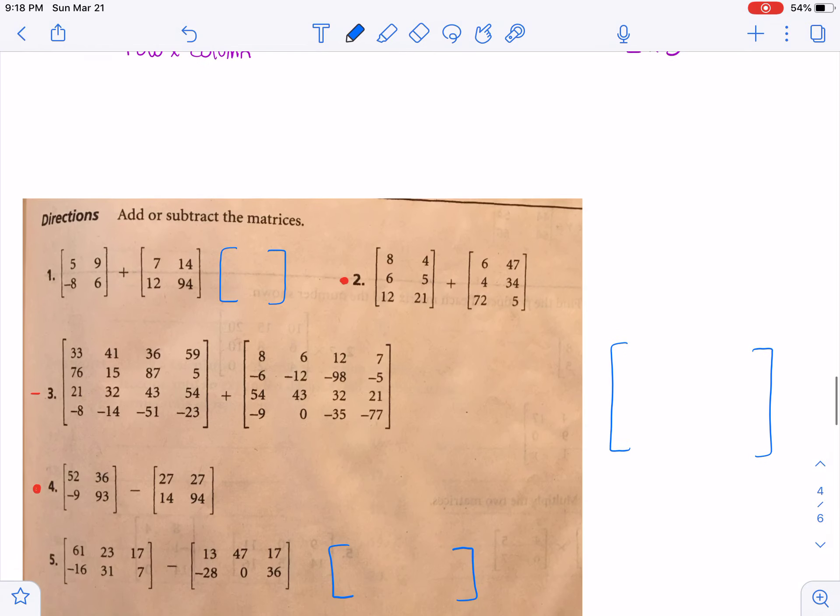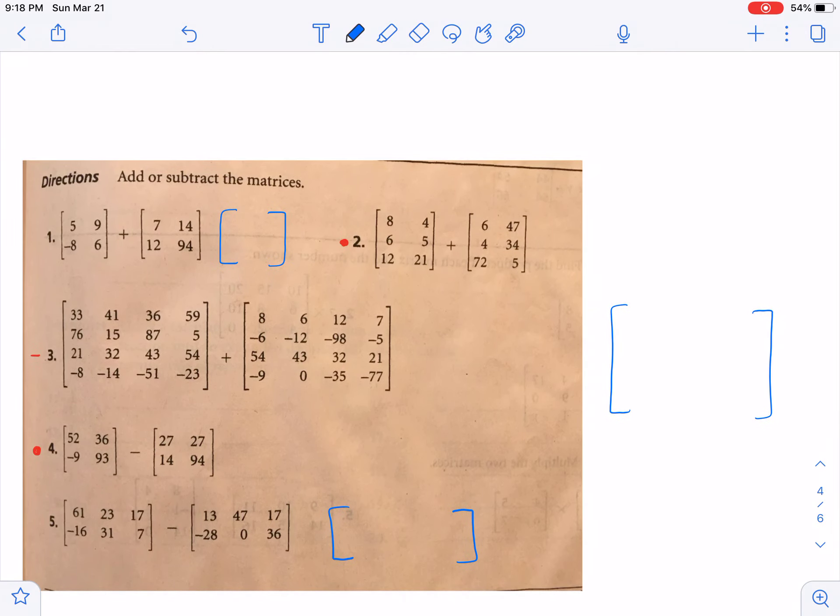We have several examples here. We're going to do numbers one, half of three, and five together. And then I'll ask you to do two, the other half of three, and four.